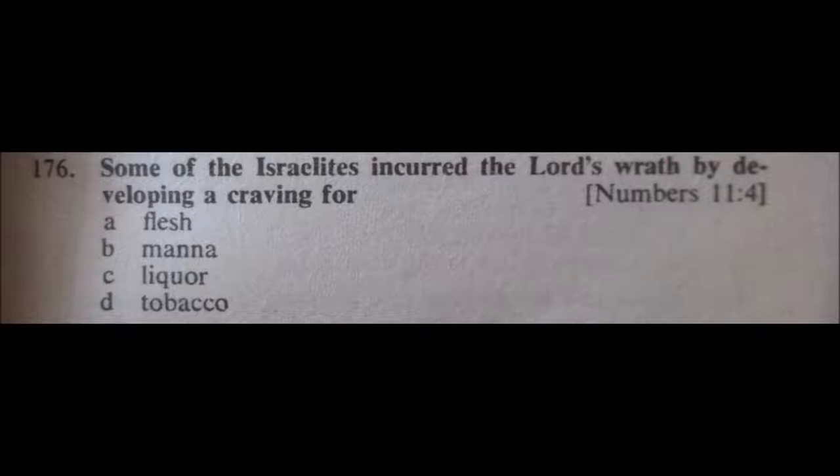176. Some of the Israelites incurred the Lord's wrath by developing a craving for: A, flesh; B, manna; C, liquor; or D, tobacco. D, completely not right. C, I don't think is correct either — I think we're a little early for that. And B, manna — I don't think it's manna. I think it's A, flesh. So 176, A.